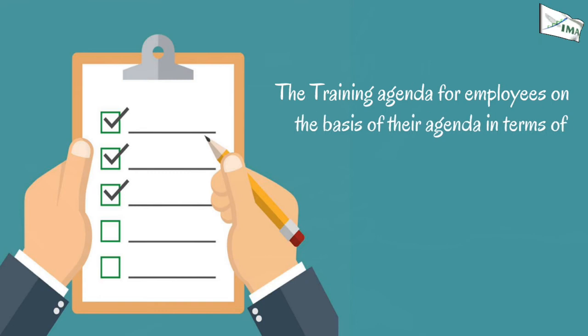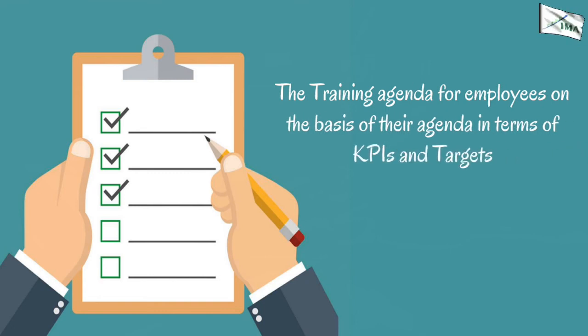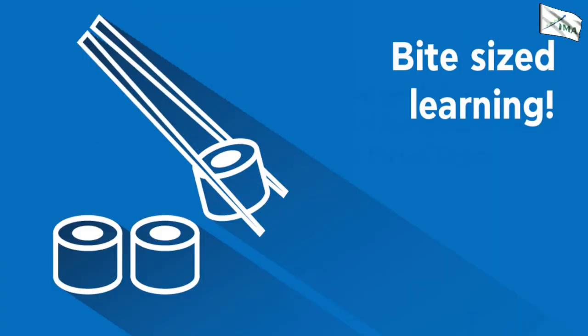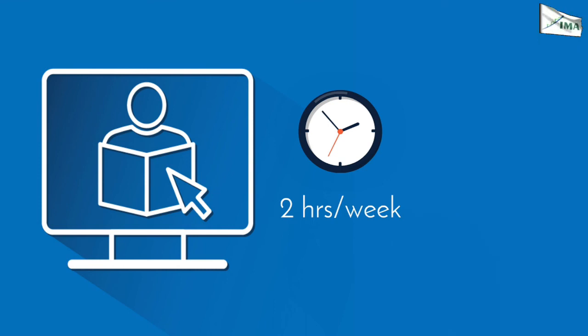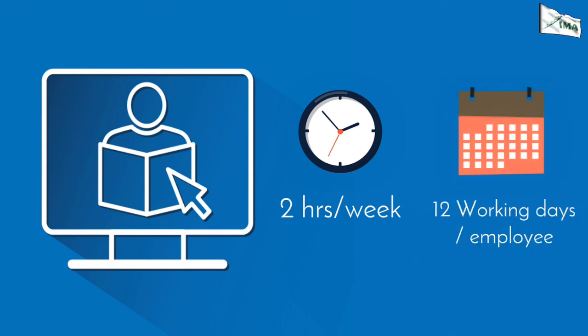You can work out the training agenda for employees on the basis of their agenda in terms of KPIs and targets. This training agenda is worked out in terms of micro skills that the employees need to achieve the KPI targets for that year. These micro skills are addressed with micro training modules using e-learning technology. The training happens throughout the year and it is done at a micro level that the employee can use to straight away perform better. Typically, every employee would spend 2 hours per week for learning. This makes it 12 working days per employee, which is even better than the world-class standard.